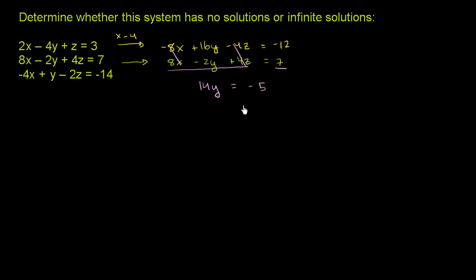We have negative 5. We could solve this, this is one equation and one unknown. But we haven't used the third constraint yet. We haven't used this constraint over here. We could actually solve it, just divide both sides by 14. And we get y is equal to negative 5 over 14.